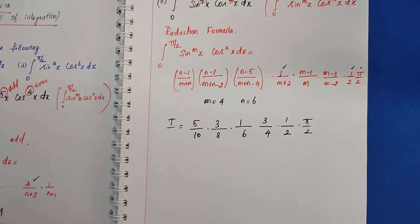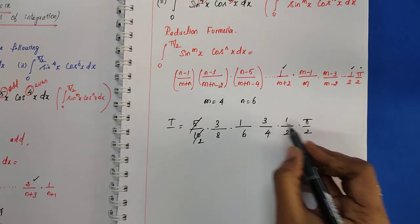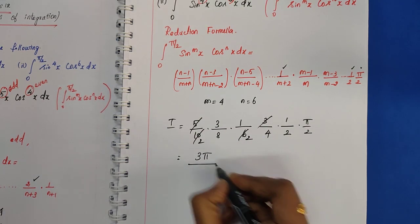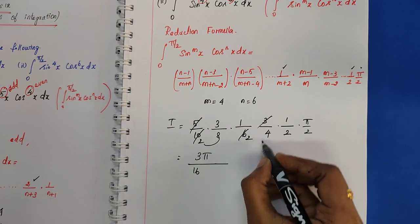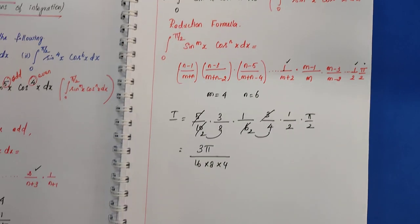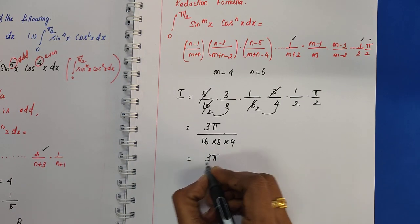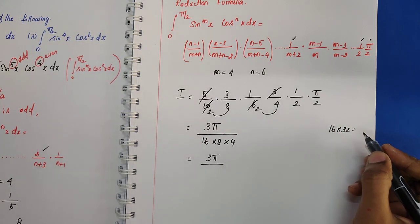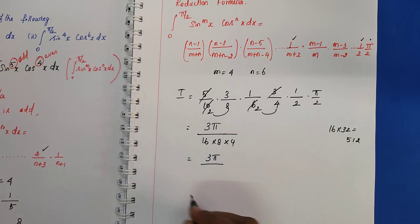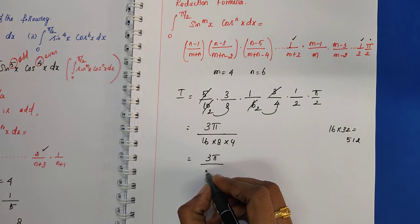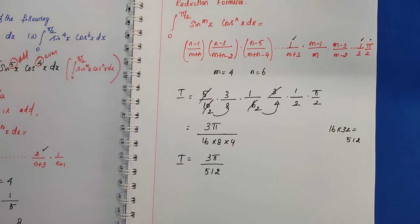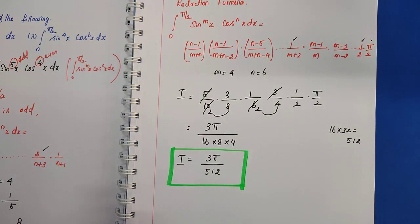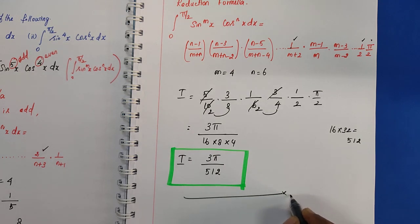Simplifying: numerator terms 1×5, 1×3 give 5 and 3; combined numerator is 3π. Denominator: 2×8=16, 2×4=8, 2×2=4, giving 16×32=512. Therefore I = 3π/512. This is the answer for Division number 2. Division number 2 is also over. Thank you.